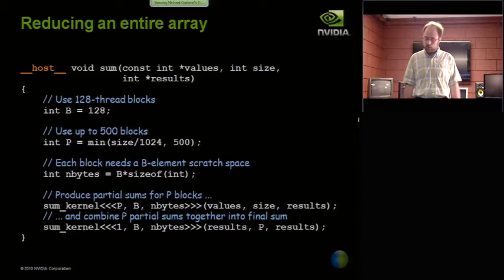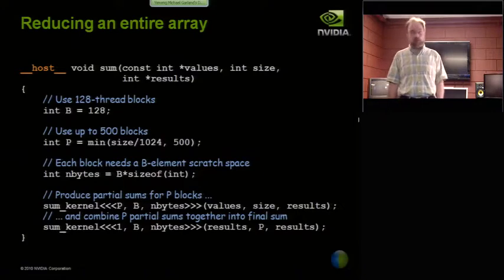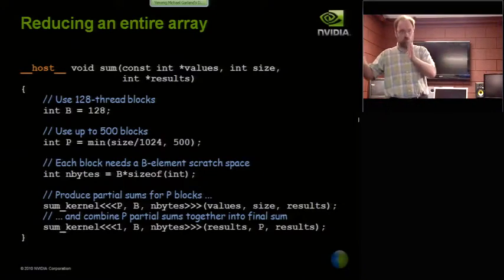So here's the host code that does that. It picks some thread block size. It decides how many thread blocks to launch. This particular case, I just decided 500 is a good maximum. When am I ever going to need more than 500? And then it just launches that kernel twice. It wants to sum up all the blocks of data, and then wants to sum up the partial results.